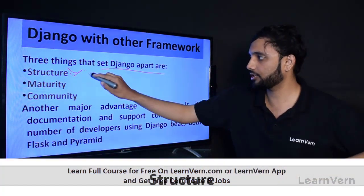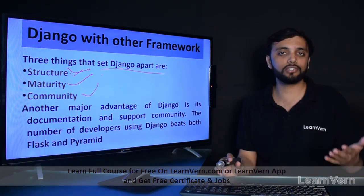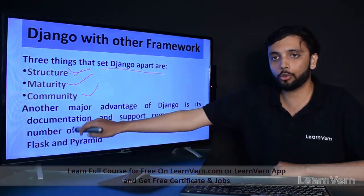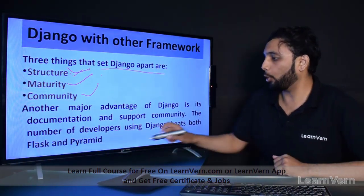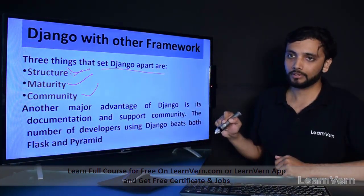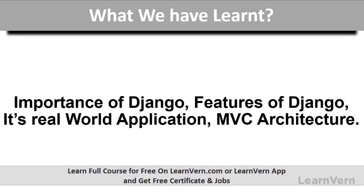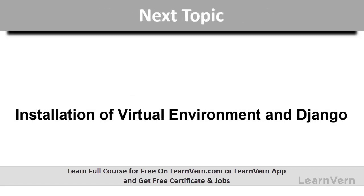So why use Django? Three things set Django apart: first, structure; second, maturity; and third, community. Django has a unique structure, maturity, and a wide community. Another major advantage of Django is its documentation and support community — the number of developers using Django beats both Flask and Pyramid. So in this lecture we have seen the importance of Django, its features, real-world applications, and MVC architecture. In the next lecture we will see installation of a virtual environment and Django.